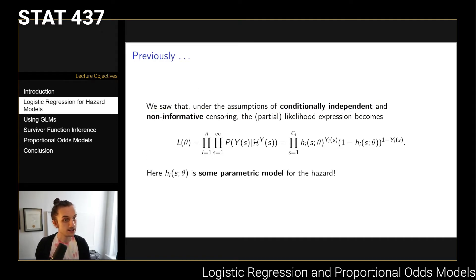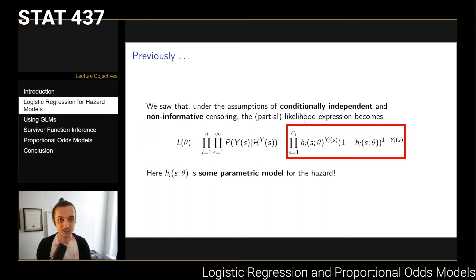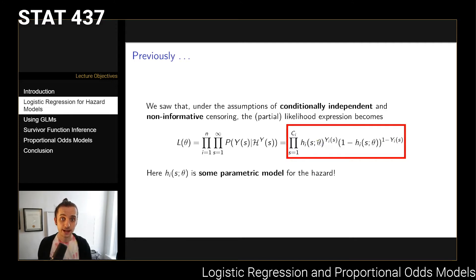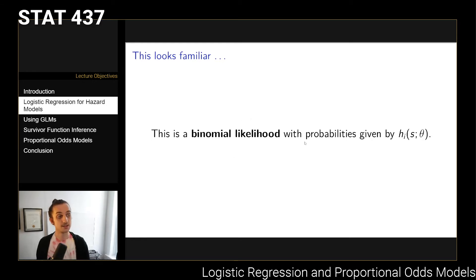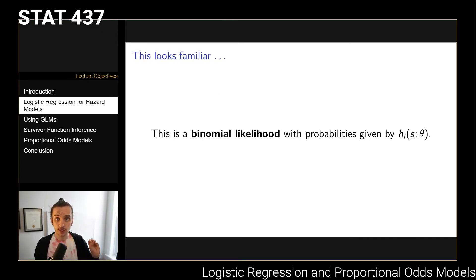If we have these assumptions, we get this nice-looking likelihood where each individual has this hazard ratio raised to the power of y_is, which is a binary indicator, and then we take 1 minus the hazard ratio raised to the power of 1 minus y_is. If you treat this h_i term as the probability of something happening - which it is in the discrete case, the hazard is exactly a probability - then this is just a binary or binomial likelihood. This is binomial likelihood where probabilities are given by h_i, parametrized with data. If we fit some parametric structure for that probability, we can exploit this likelihood process to get estimates.